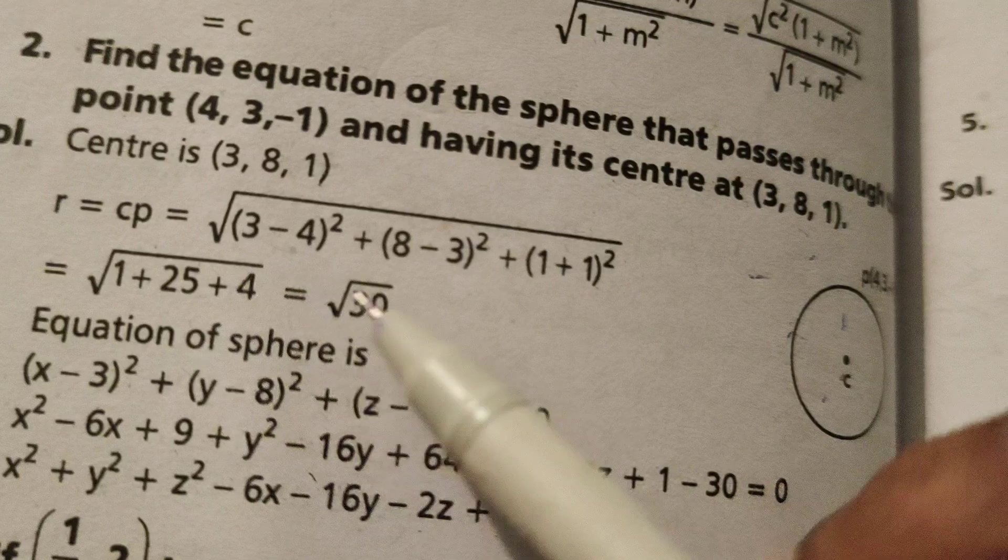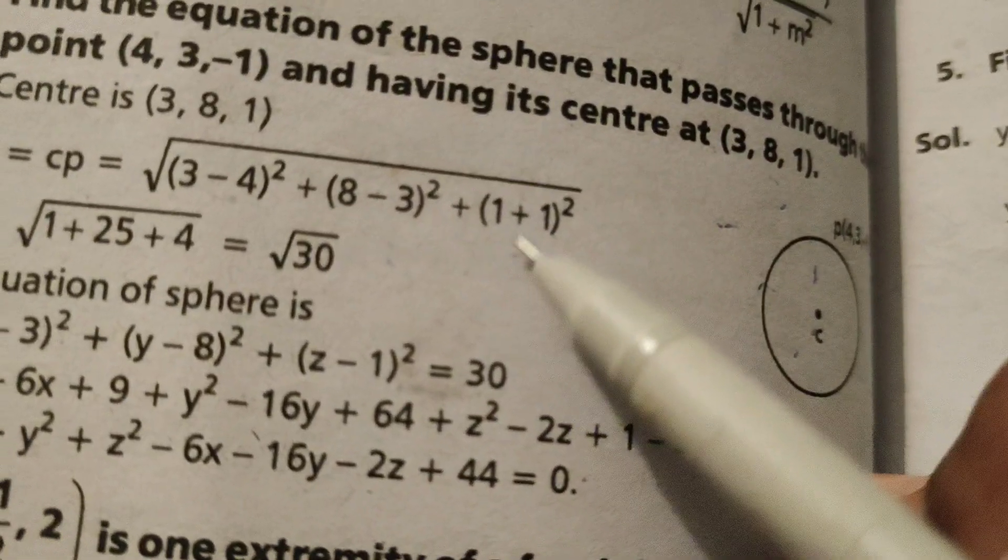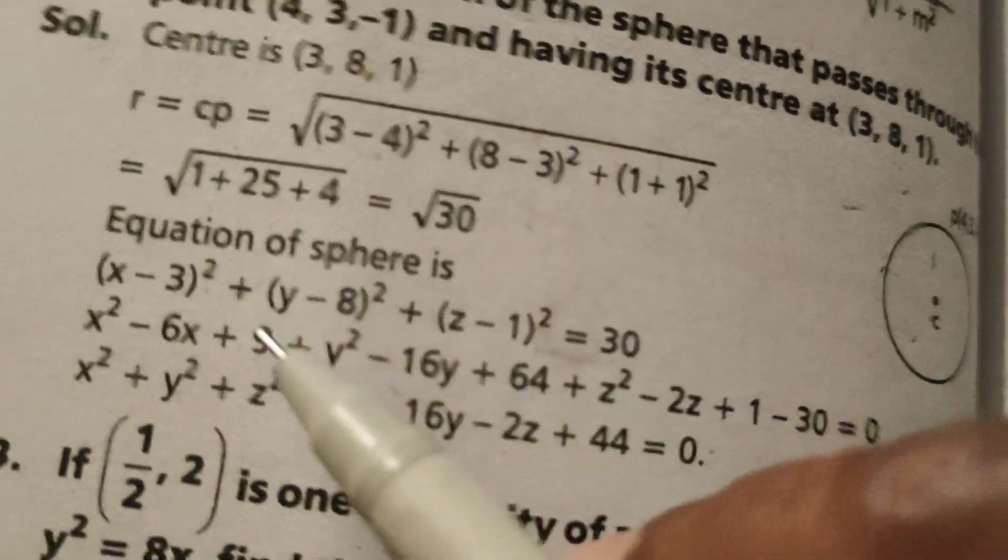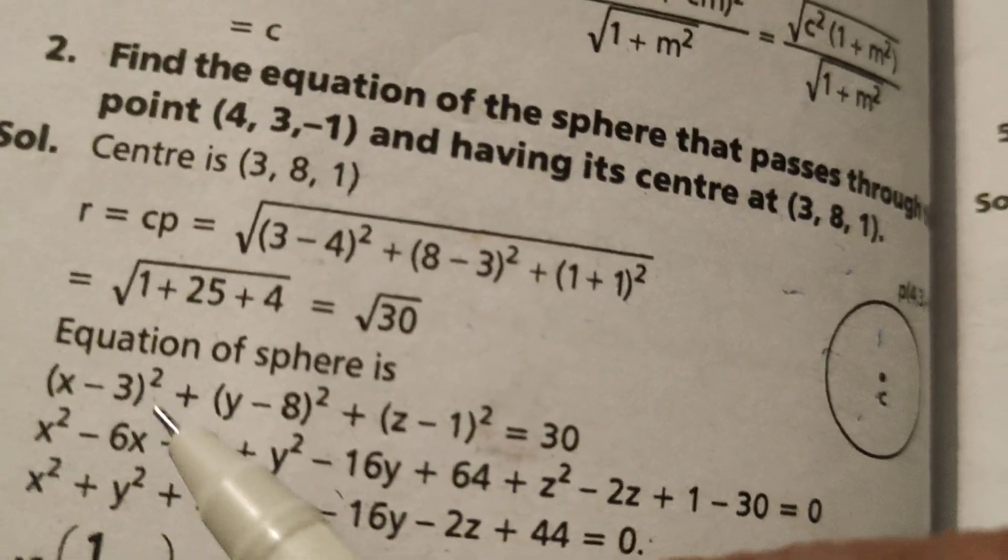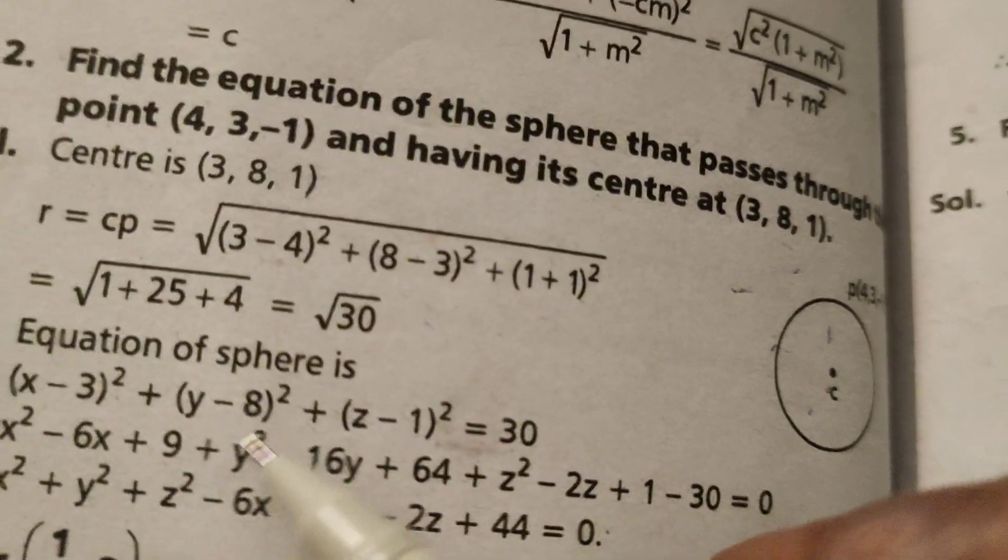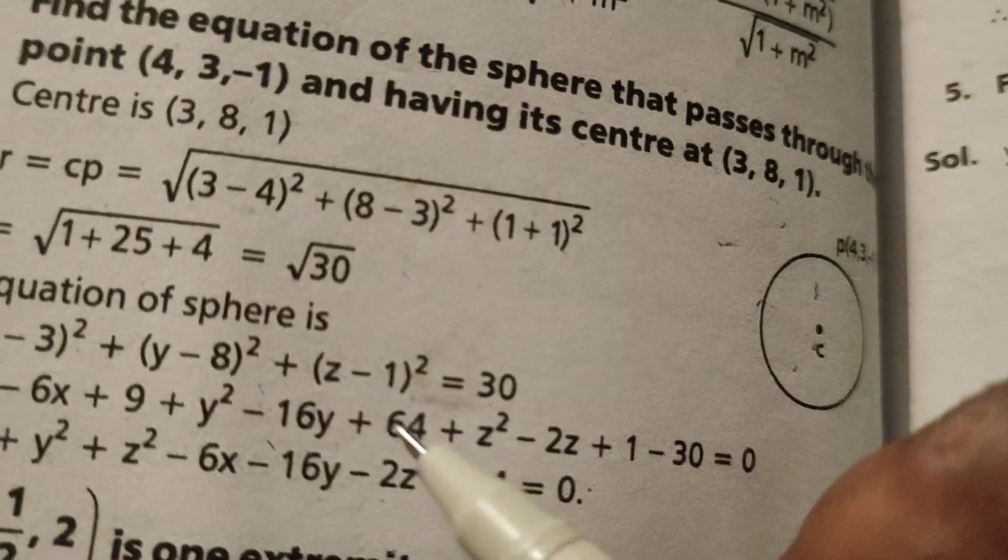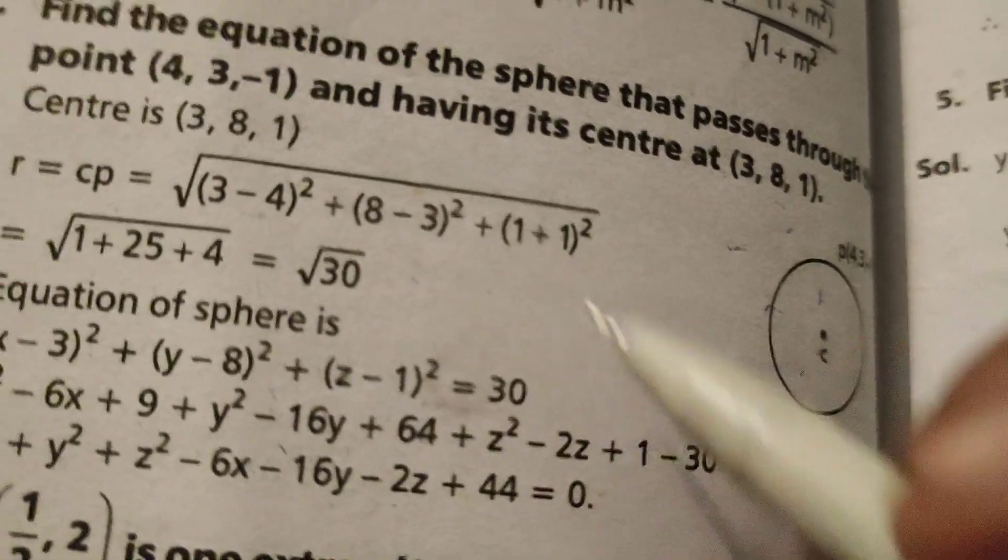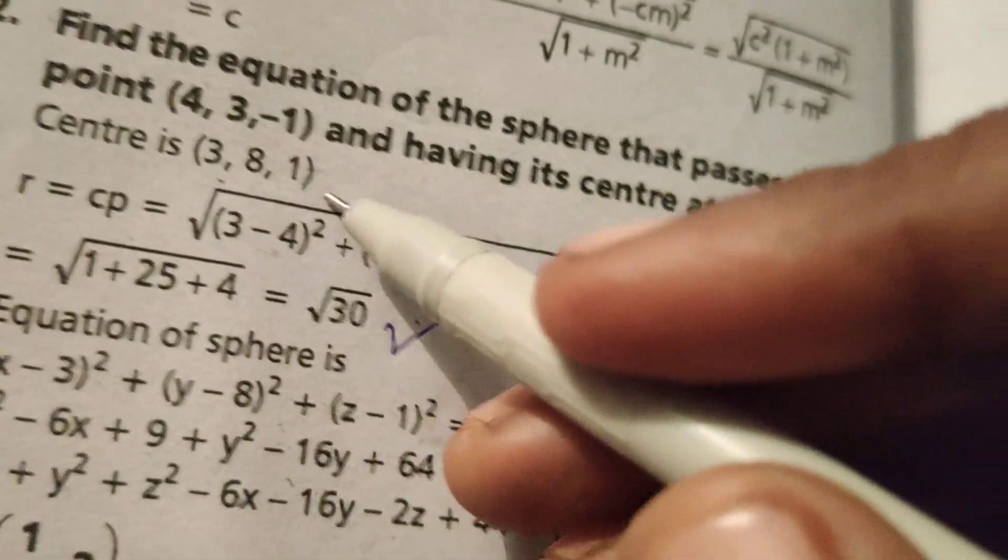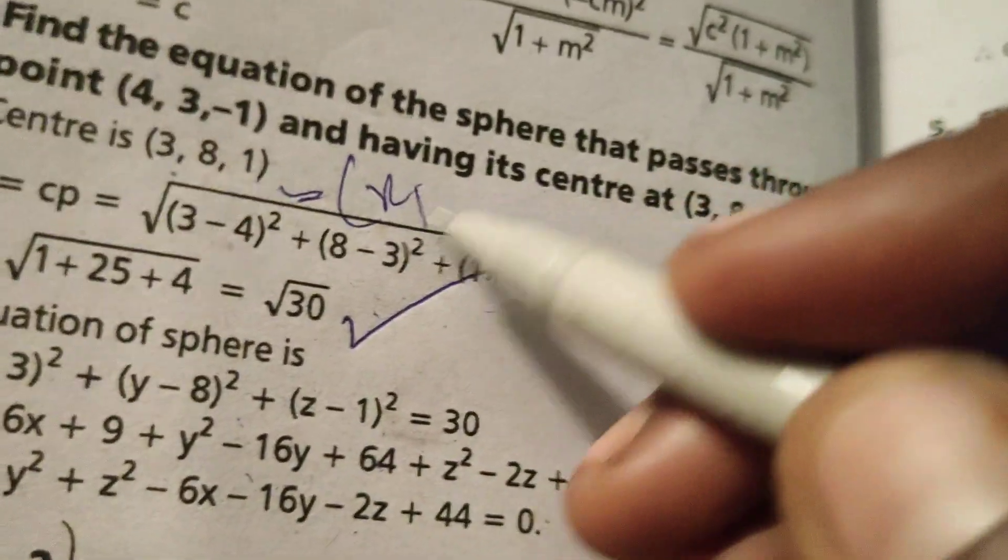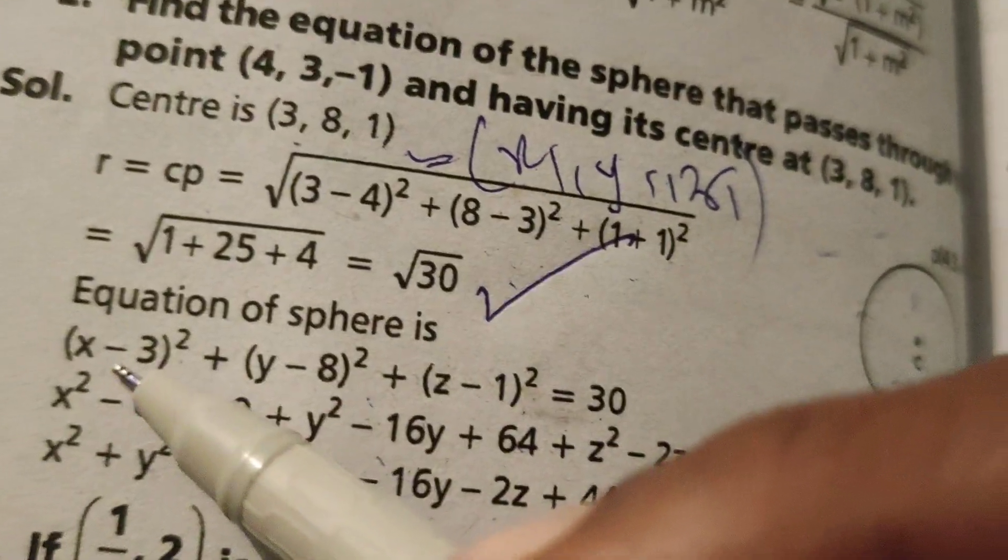1 square means 1, 5 square means 25, 2 square means 4, so √(1+25+4) = √30. The equation of the sphere is: (x-x1)² + (y-y1)² + (z-z1)² = r². Here x1, y1, z1 are the center coordinates.